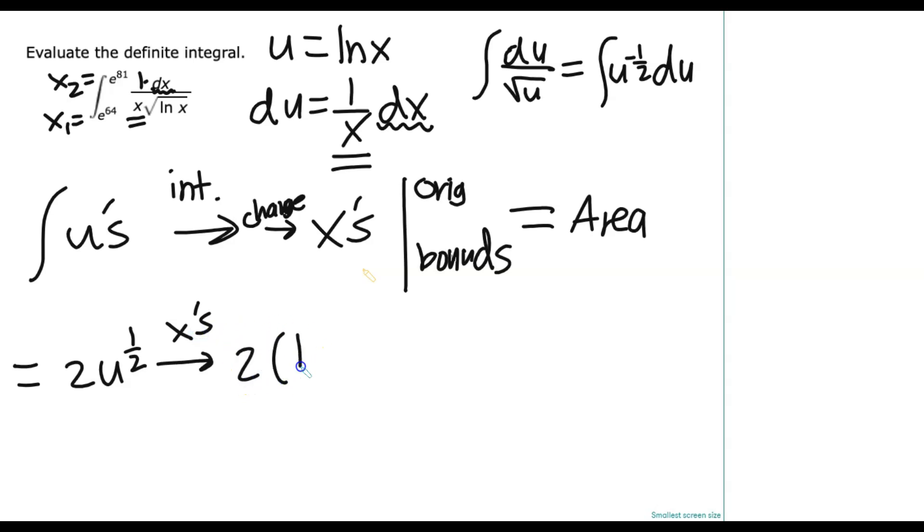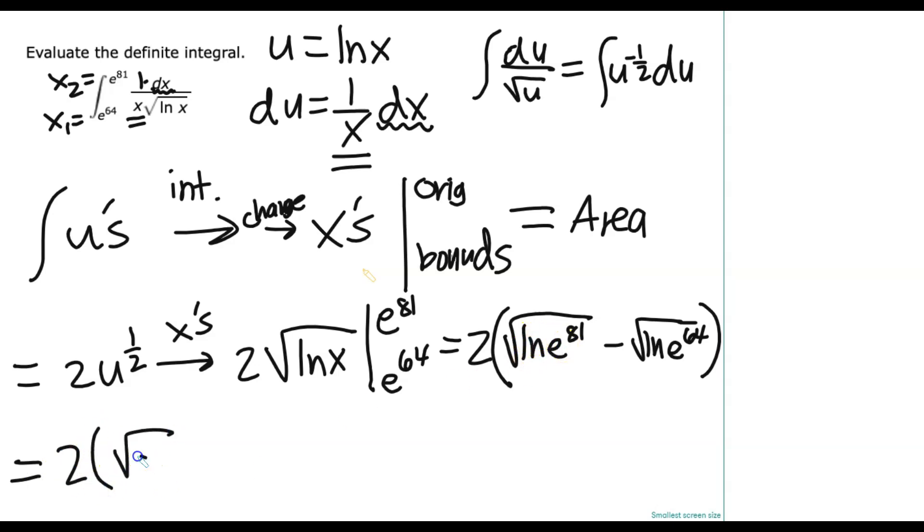So we're going to get the same thing we had before. We're going to get u to the 1 half with a 2 out front. But then we're going to say change to x's. So then we've got 2 ln(x) to the 1 half, which is square root. So we've got square root of ln(x). And then the bounds are e to the 81st and e to the 64th. So this is 2 square root of ln of e to the 81st minus square root of ln(e) to the 64th. So this is a little bit more cumbersome. Notice now you have to do 2 times the square root of 81 minus the square root of 64. And then now we're back to where we were. So this is 9 minus 8. So that's 2 times 9 minus 8, which is 2.